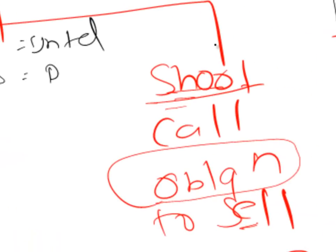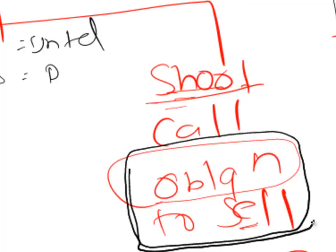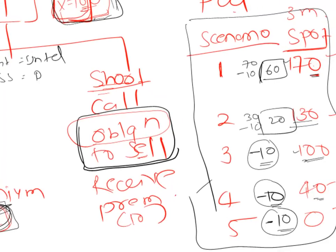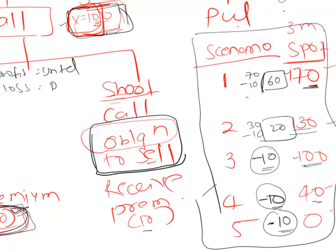Now let's think from the perspective of short call. Short has an obligation to sell, so whether short is required to sell depends on what action the long decides to take. When the price was 170, long exercised, so short was obliged to sell an asset trading at 170 for only 100 — a loss of 70. But short already received a premium of 10, so net loss is 60. Profit of long is the loss of short, and this will always be the case as they are counterparties of each other.